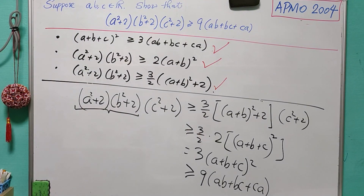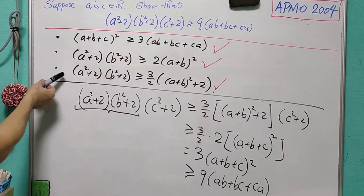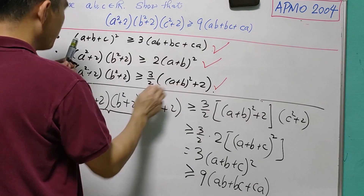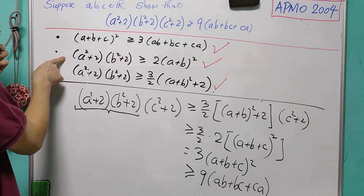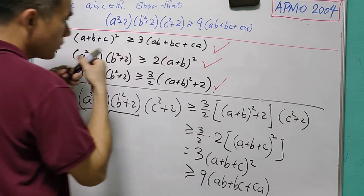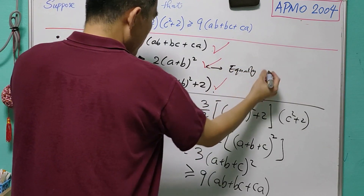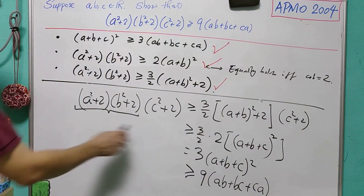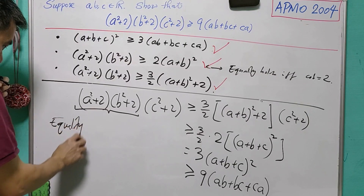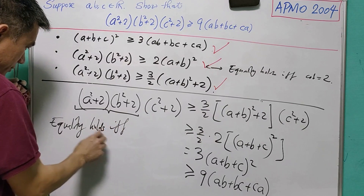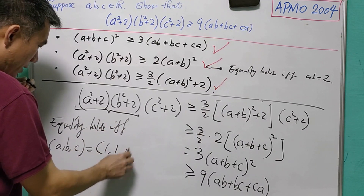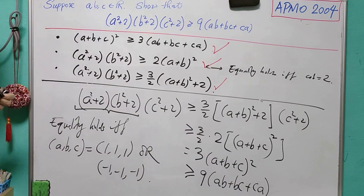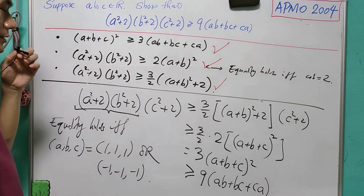Always remember to check when equality holds. From our work, equality holds if and only if A=B=1 or A=B=-1 from result 3, and equality in result 2 requires A+B=C (up to sign). We conclude that equality holds if and only if A=B=C=1 or A=B=C=-1. This is the end of today's lesson. See you again, bye-bye.